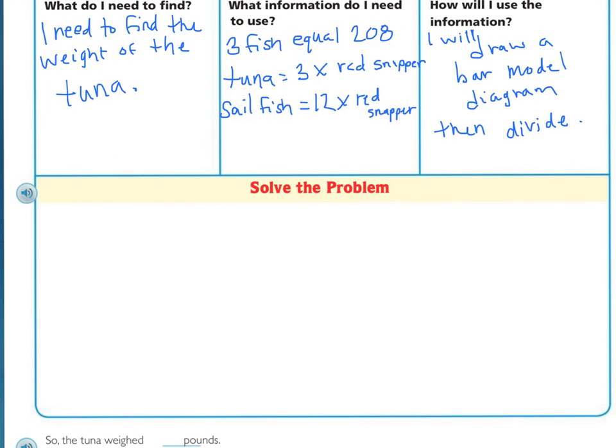Now we need to follow through with the plan. Everything is based off of the red snapper. So the red snapper is going to be our one square. Now the tuna is how many times the red snapper? Three times. So how many squares? Three squares. And they need to all be generally the same size. And lastly we need to make our diagram for the sailfish. And the sailfish was 12 times the red snapper. So we need 12 boxes that are the same size.